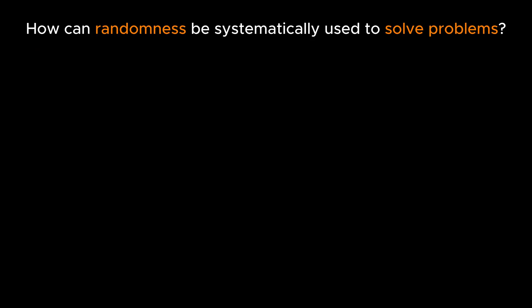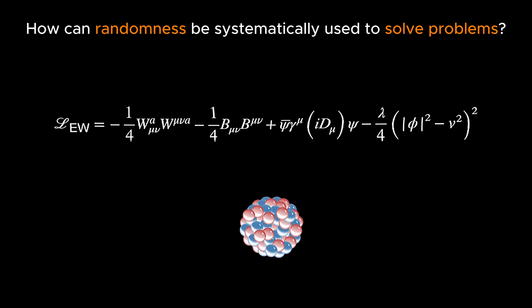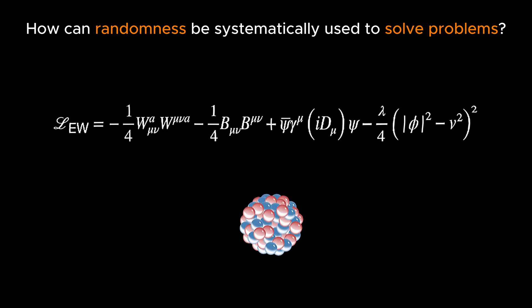Now let's ask a fundamental question. How can randomness, something so unpredictable, be systematically used to accurately solve complex problems like understanding nuclear chain reactions or training advanced AI models?